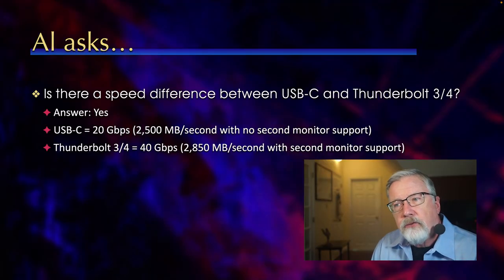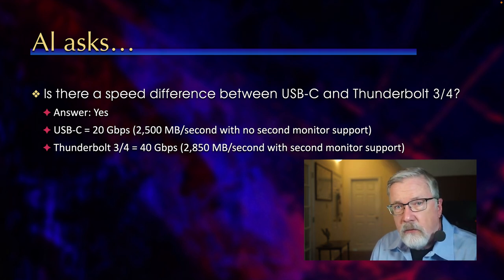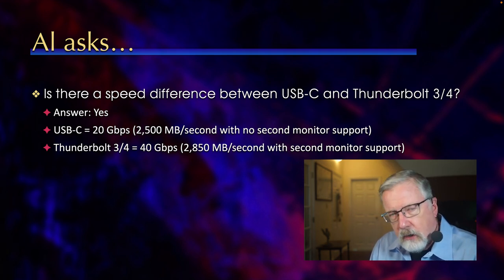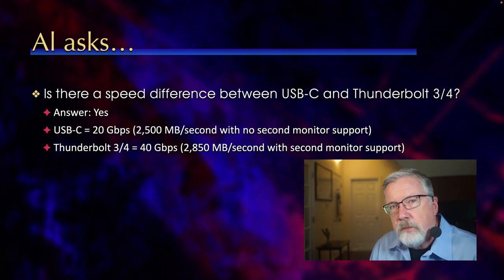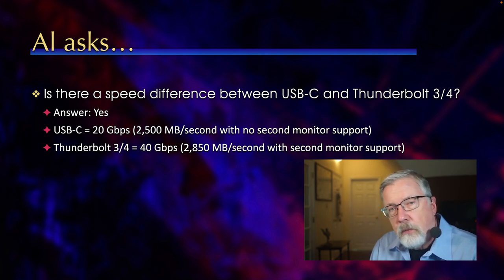Al asked: is there a speed difference between USB-C and Thunderbolt 3 and 4? I gave an incorrect answer, which I feel guilty about. The answer is yes. USB-C has a maximum speed of 20 gigabits per second, while Thunderbolt 3 and 4 has a maximum speed of 40 gigabits per second.